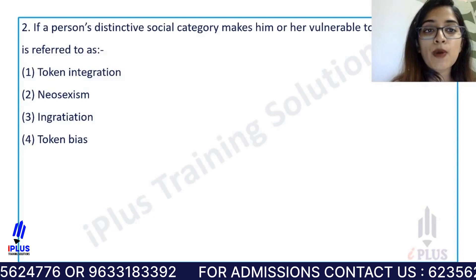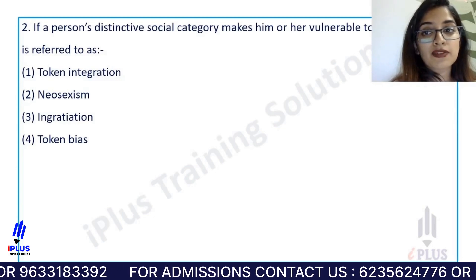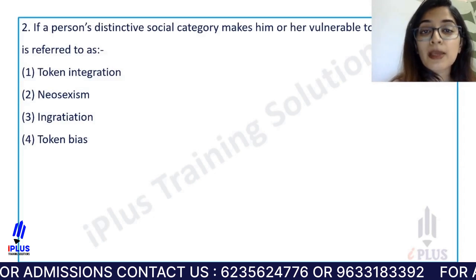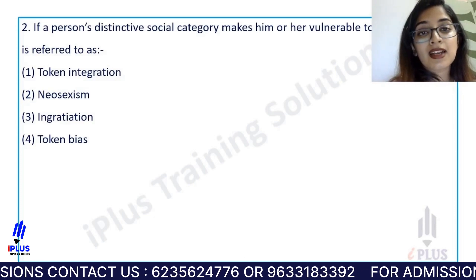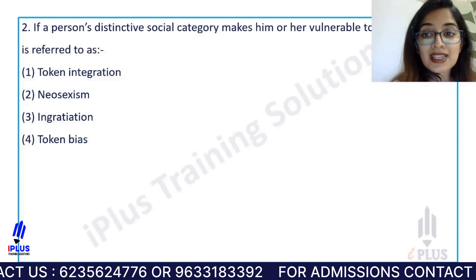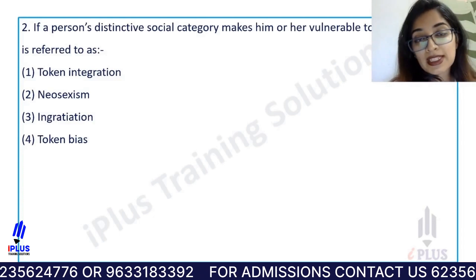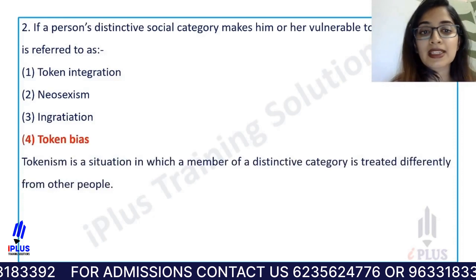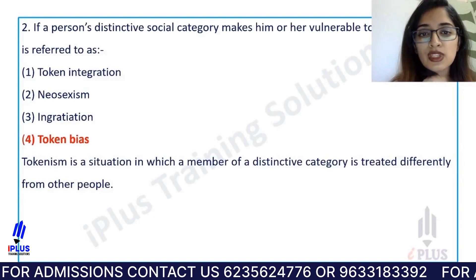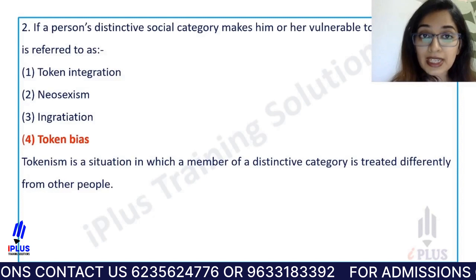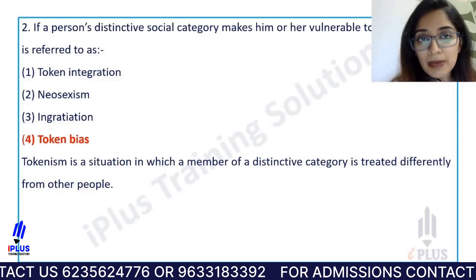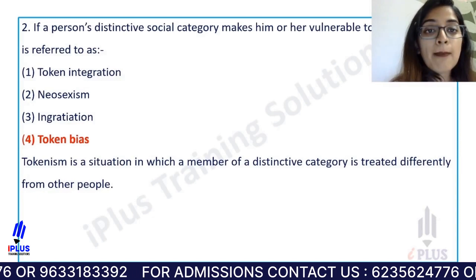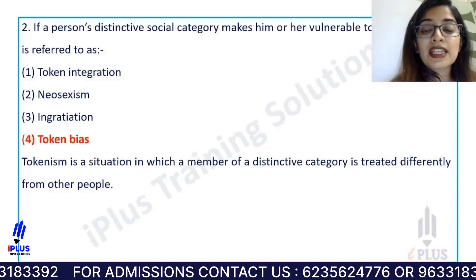If a person's distinctive social category makes him or her vulnerable to stereotyping, it is referred to as what? The options are: token integration, neo-sexism, ingratiation, token bias. The right answer is token bias.